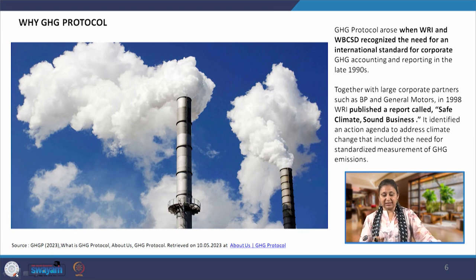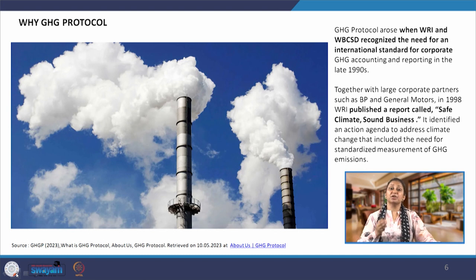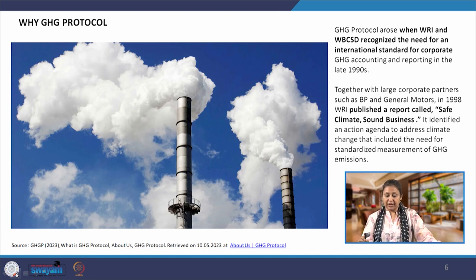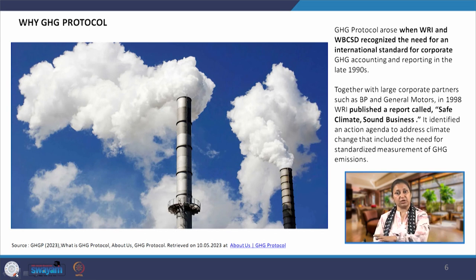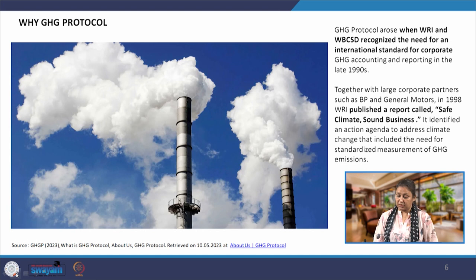In 1998, WRI published a report called 'Safe Climate and Sound Business.' This particular report is considered the parent report or the origin of what later came to be known as the GHG protocol. This report was prepared and published by WRI with the help of large corporate partners such as BP and General Motors — that was in 1998.